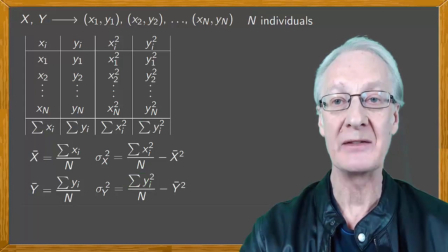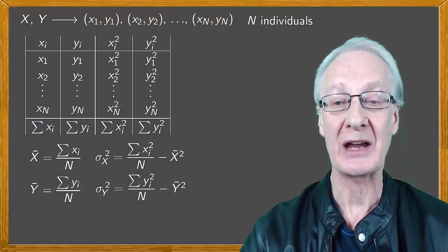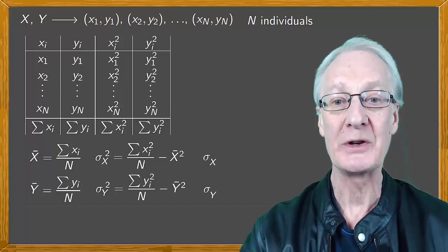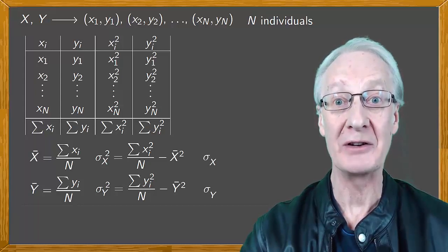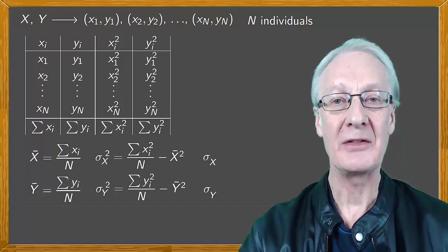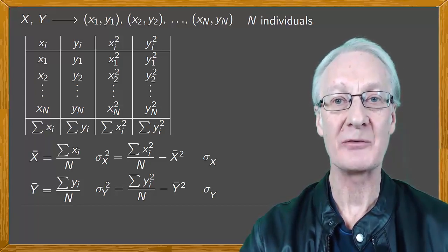We can then obtain the standard deviations of x and y, sigma x and sigma y, which are just the square roots of the variances. If any of this isn't clear to you, then you'll need to review the basics of one-dimensional descriptive statistics.